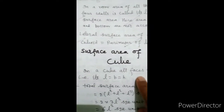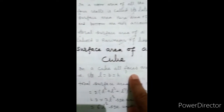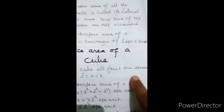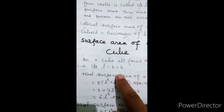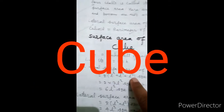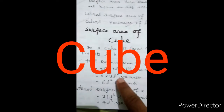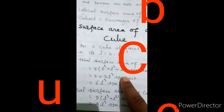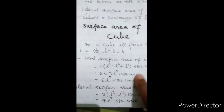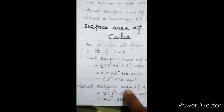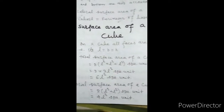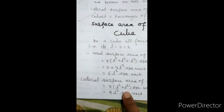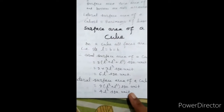Now, come to the surface area of a cube. In a cube, all faces are squares. Hence, its length, breadth, and height are all the same. Hence, total surface area of a cube is equal to 2 into (L² plus L² plus L²) square units, which equals 6L² square units. Lateral surface area of a cube is equal to 2 into (L² plus L²) square units, that is 4L² square units.